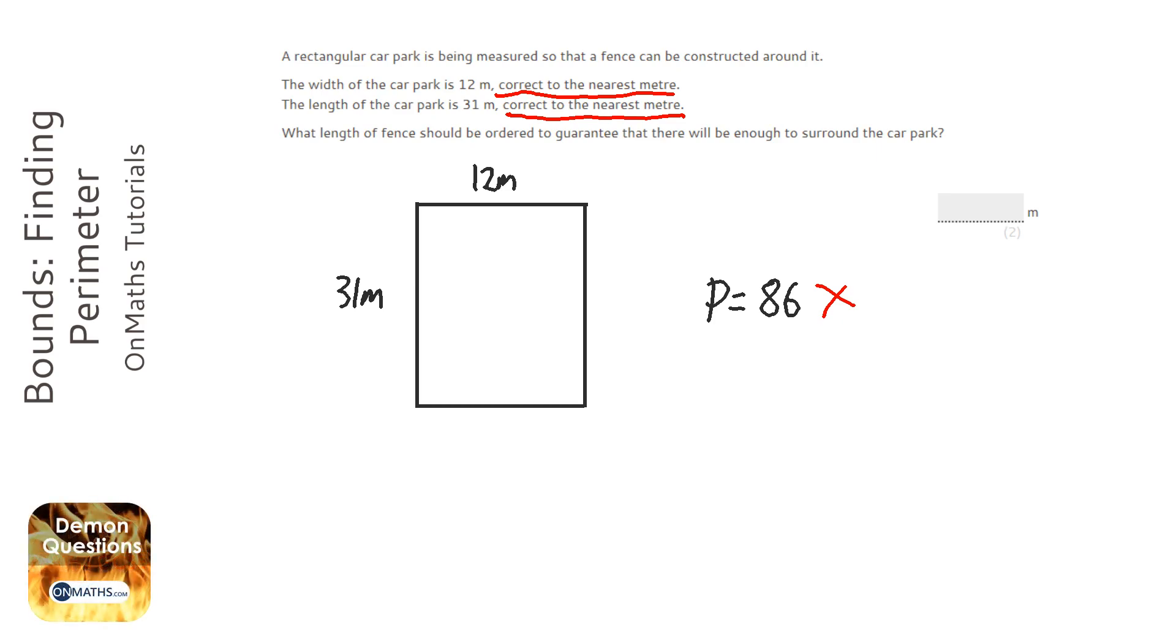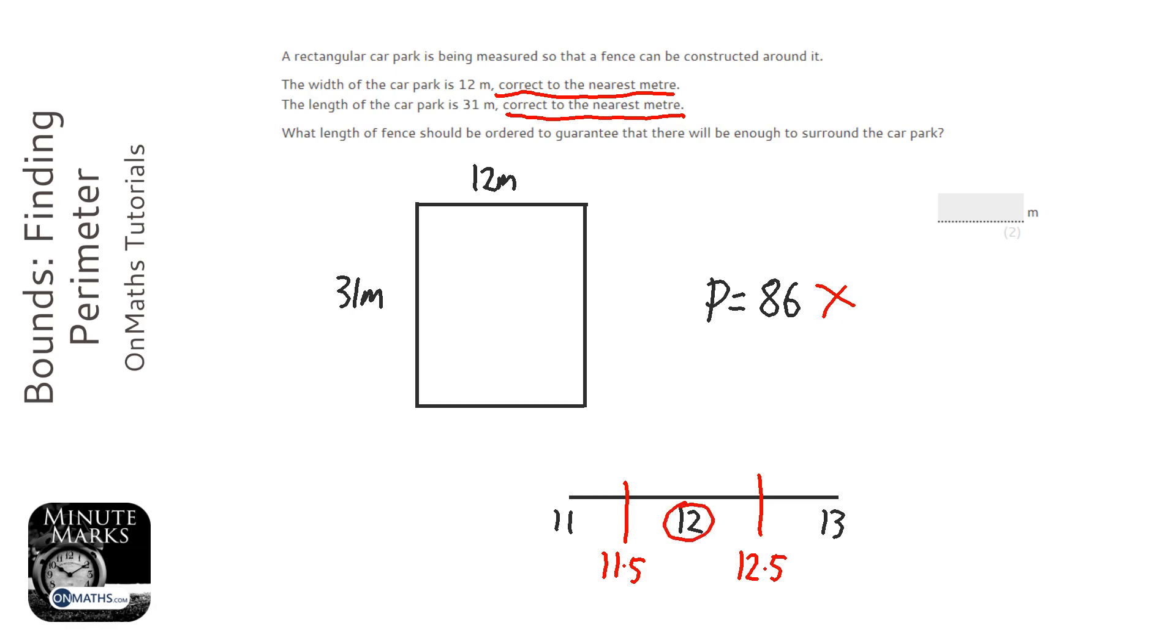So the problem with that is that, if we just do a quick diagram to show this, when you do something to the nearest metre, it means that you could either have all the way down here at 11.5, or all the way up here at 12.5, if you've rounded it to the nearest metre, so if it's rounded to 12.